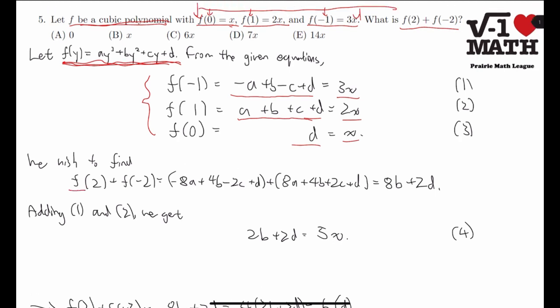Now, notice that we wish to find f(2) plus f(-2), which is, from here, we can just plug in 2 and negative 2, and get, for negative 2, we get this, and for 2, we get this. And a lot of terms cancel. These two cancel, and these two cancel, and we get 8b plus 2d.